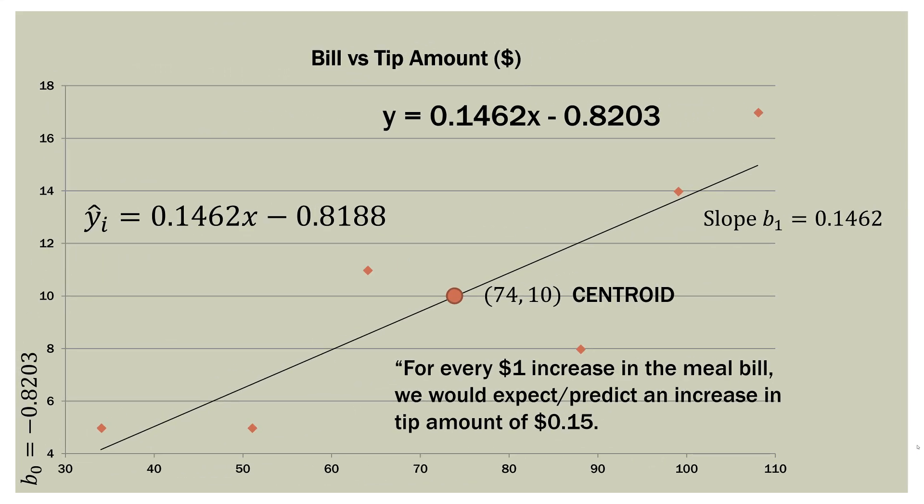Here is our regression model and equation. Our regression line is y equals 0.1462x minus 0.8188. There's a little bit of difference in these two regression equations due to some intermediate rounding in different software packages, but it's basically the same thing — only different to the third or fourth decimal place. Our slope is 0.1462. Our centroid, which is the mean of each variable, is 74 for bill amount and $10 for tip amount. We interpret this as meaning that every dollar increase in the meal bill, you'd expect to predict an increase in the tip by about 15 cents.